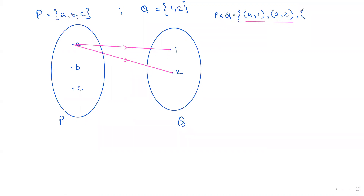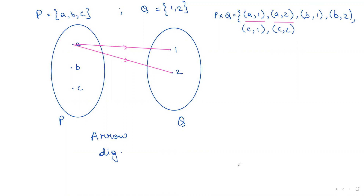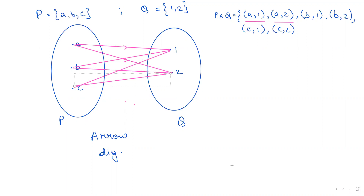Similarly, if I consider other elements which are again ordered pairs of the Cartesian product P cross Q, those would be B comma 1, B comma 2, C comma 1, and C comma 2. In the arrow diagram, you can represent them as respective lines: B to 1, B to 2, C to 1, and C to 2, each with its own arrow.